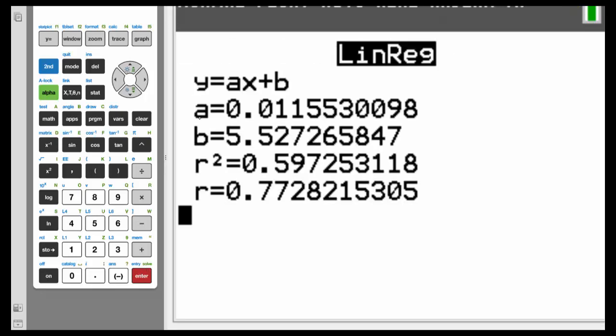So notice here, the A is the slope, because it's y equal to ax plus b, and b is the y-intercept. So we'll round each of these to three decimal places, so a will be 0.012, and b will be 5.527. So let's put this equation on the paper now.